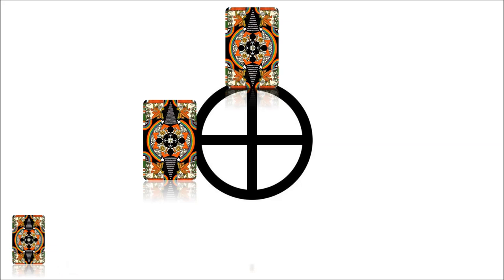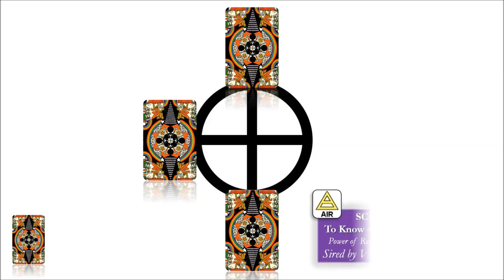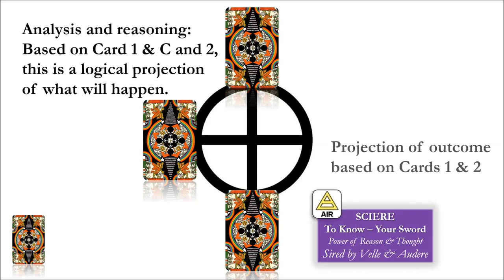Take the third card and set it into place at the southern point of your spread. This card measures the intensity of air and the strength of this element. This is analysis and reasoning. Based on card one and card two, this is a logical progression and projection of what will most likely come — what will grow out of what has started. If this is a general reading, the air card reveals conflicts present, problems to solve, the precise challenge you need to overcome to get where you want to be.